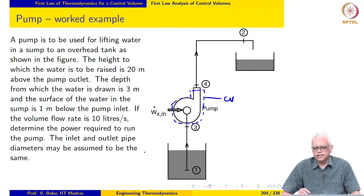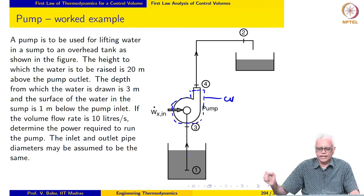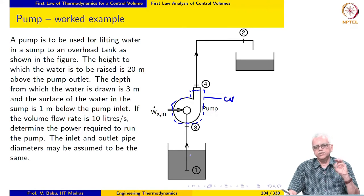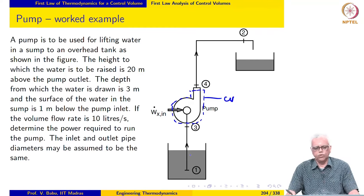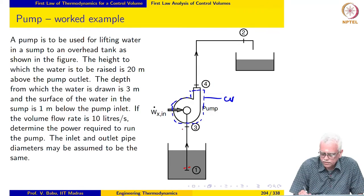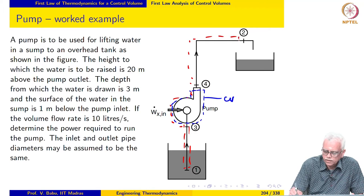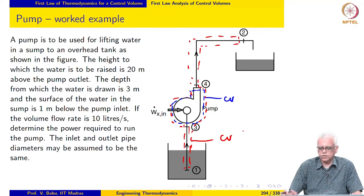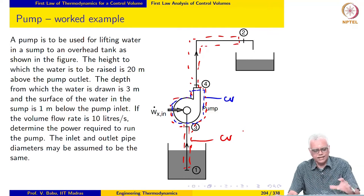The next example uses a pump to lift water from a sump to an overhead tank. Basically, the power that we are putting in is being converted to potential energy of the water as it is lifted from the sump at ground level to the overhead tank. The control volume for this would look something like this. All the other information required for the analysis is given and we are asked to determine the power required to run the pump.